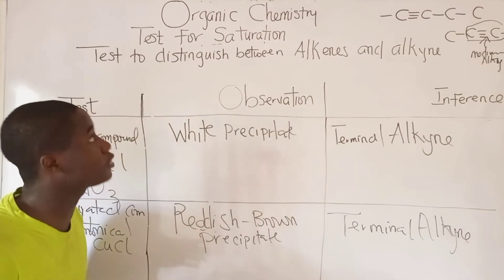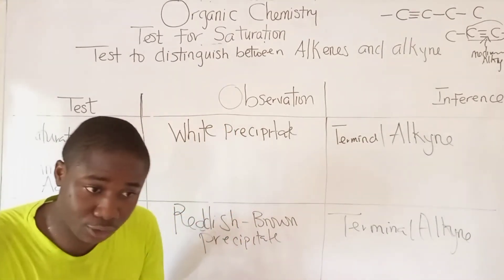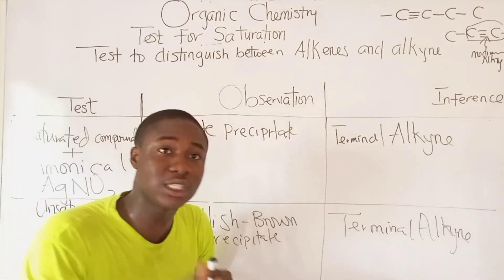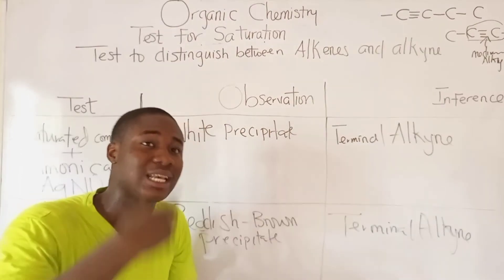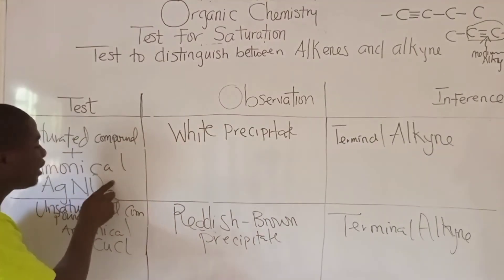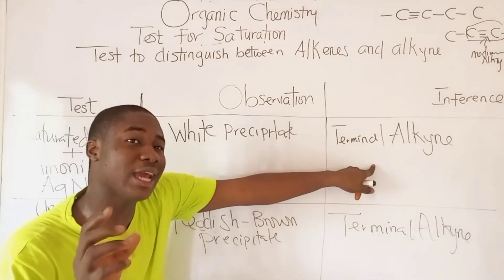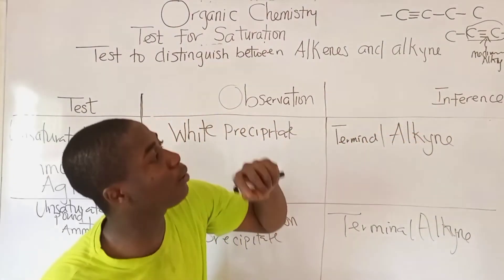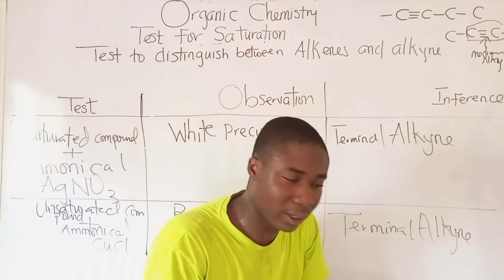To recap: we use bromine water to differentiate saturated from unsaturated compounds. If bromine water is decolorized, an unsaturated compound (alkene or alkyne) is present; if not decolorized, a saturated compound (alkane) is present. To differentiate alkenes from alkynes, we use ammoniacal silver nitrate or ammoniacal copper chloride. A median alkyne cannot give a positive test to either reagent — only terminal alkynes do.